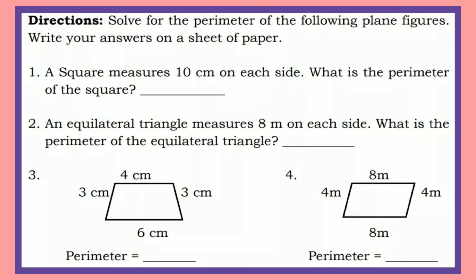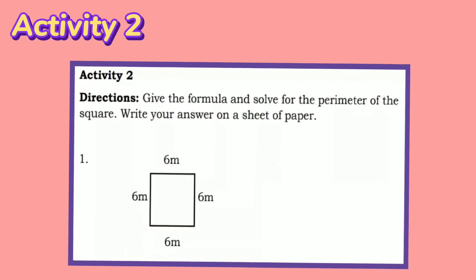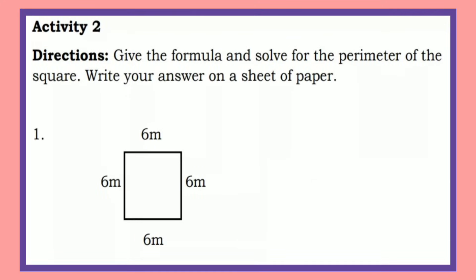Let's try Activity Number 1: Solve for the perimeter of the following plane figures. Number 1, a square measuring 10 centimeters on each side — the perimeter is 40 centimeters. Number 2, an equilateral triangle measuring 8 meters on each side — the perimeter is 24 meters. Number 3, the perimeter is 16 meters. Number 4, the perimeter is 24 meters.